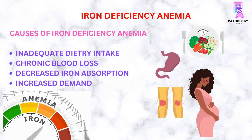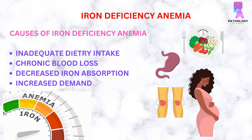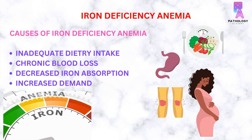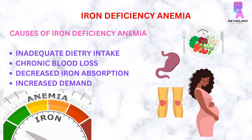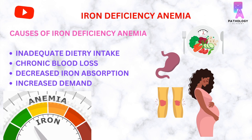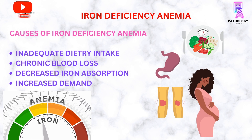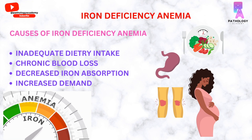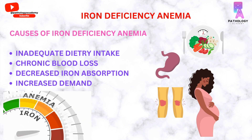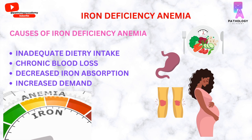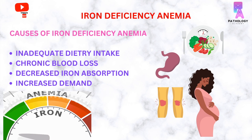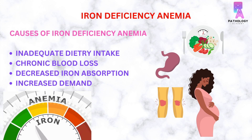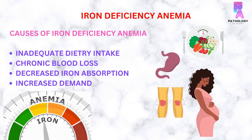Patients who have undergone gastrointestinal surgery where part of the stomach or duodenum is removed can develop problems in iron absorption. Also, people who suffer blood loss due to any sort of trauma, or females during their periods, can also develop iron deficiency anemia.